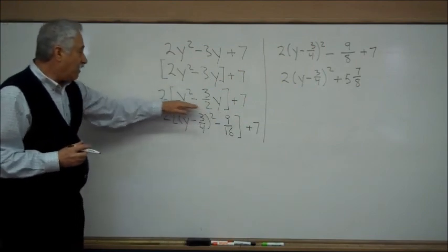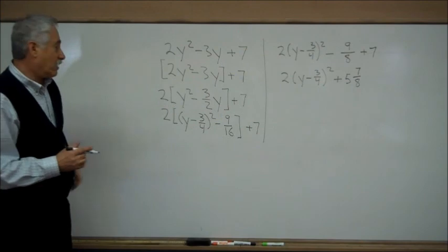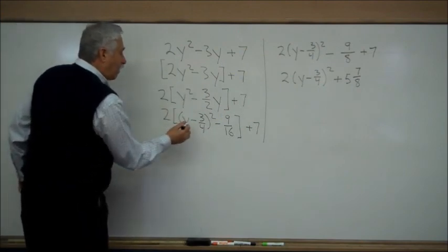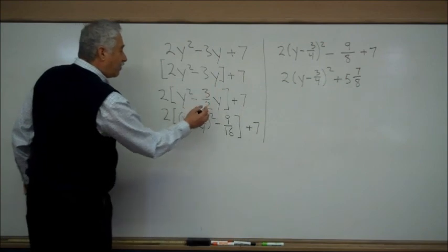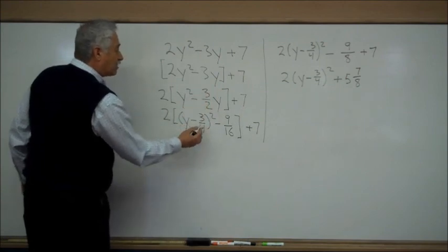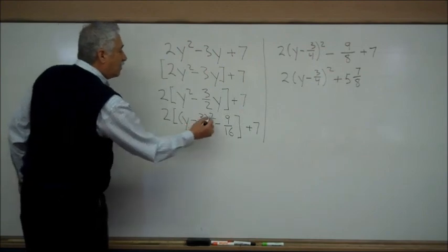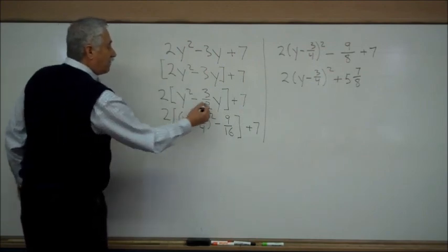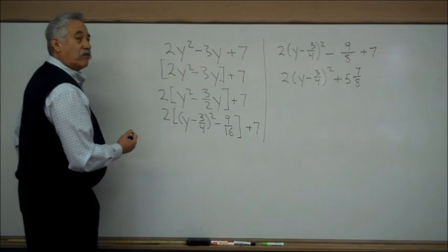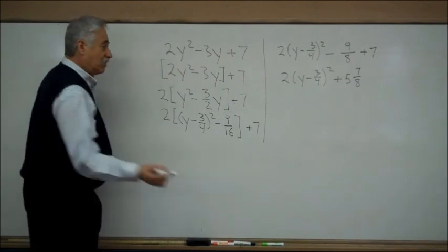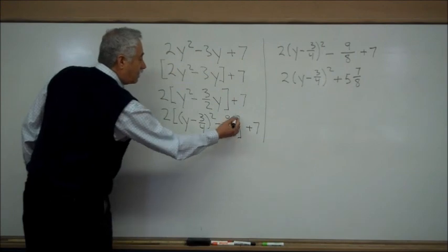Now that this has been prepared in the bracket, you complete the square by taking the y² and using a y, and half of the minus 3 halves and getting minus 3 fourths. You put that in the quantity, you square it, and that will give us the first 2 terms, but it will also give us more than we want. It will give us a plus 9 sixteenths, which we subtract in the bracket.